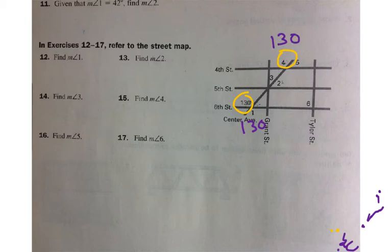Then I can label the problems that I know. It told me to find the measurement of angle 1, for example. That's 130 degrees. The measurement of angle 4 I also know is 130 degrees.